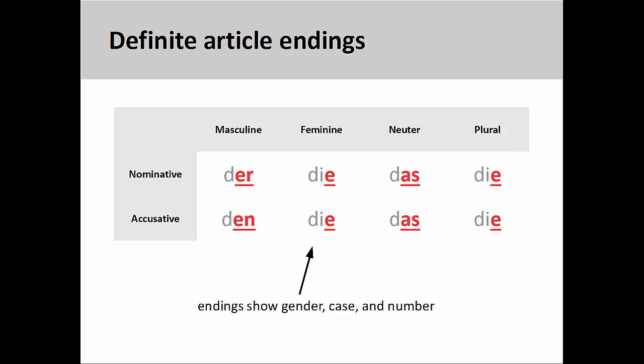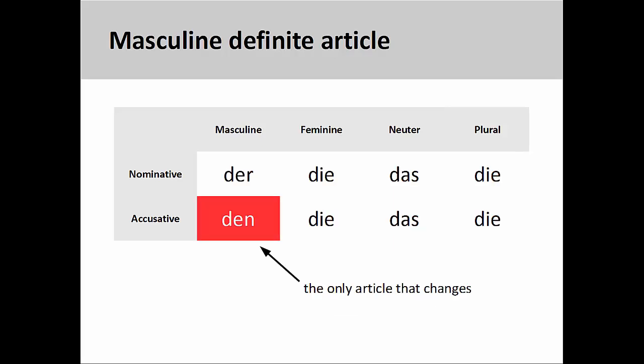You'll recall from the presentation on definite articles that the endings of these articles show the gender, case, and number of the noun they modify. You will also recall that the masculine definite article was the only one that changed as it moved from the nominative to the accusative case.